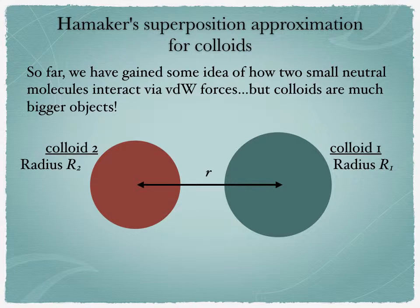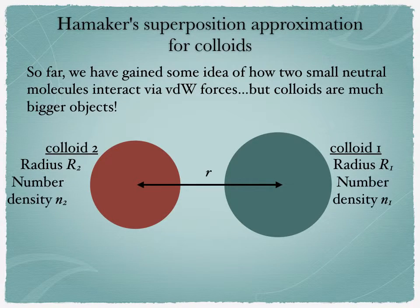If you consider two colloids, colloid 1 and colloid 2, they would have radius r1 and r2 respectively. And then you fix their distance that you call small r, the center-to-center distance between the colloids. Now, because they are macroscopic or mesoscopic materials, they contain more than one molecule. For this description, you need to specify how many molecules per unit volume you have in these colloids. So you need to specify the number density, n1 for colloid 1 and number density n2 for colloid 2.